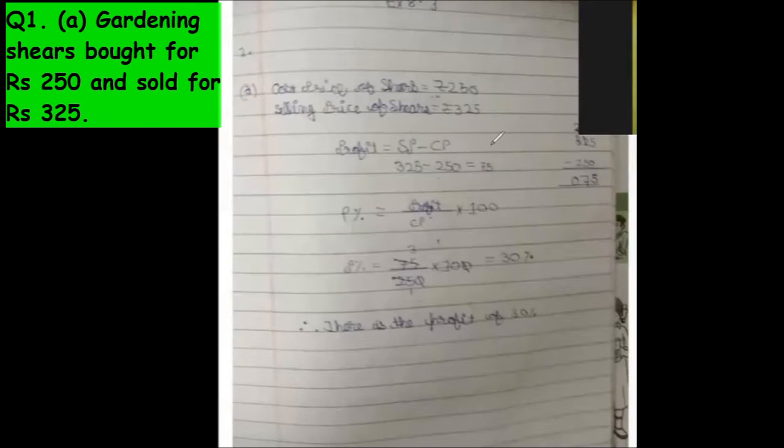Okay Excel 8.3 question number one first part, can you read the question? Okay, first part: gardening shears bought for rupees 250 and sold for rupees 325.